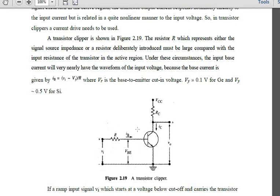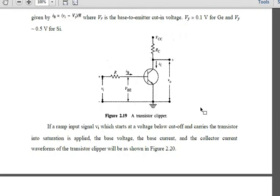The base current is I = V/R, where V is the input voltage minus the base-to-emitter voltage. This base-to-emitter voltage is the cut-in voltage and must be subtracted. For germanium the base-to-emitter value is 0.1 V, and for silicon it is approximately 0.5 V.